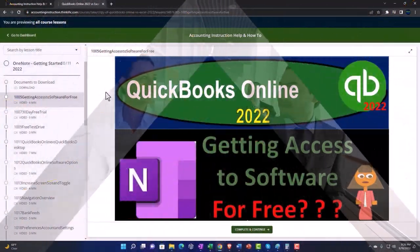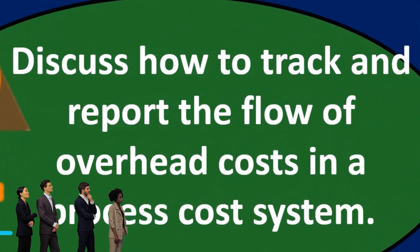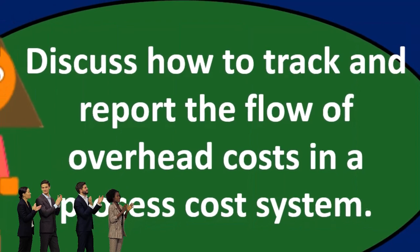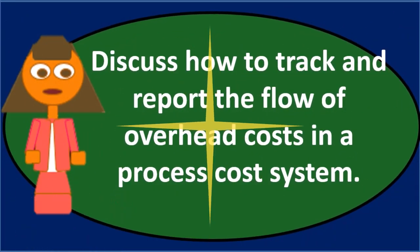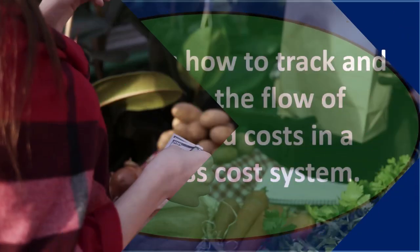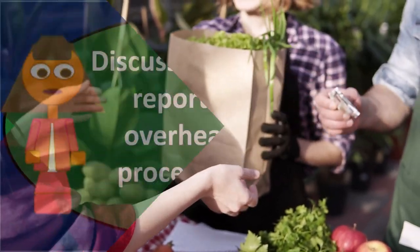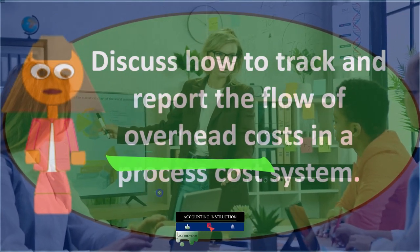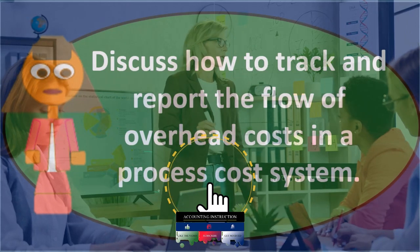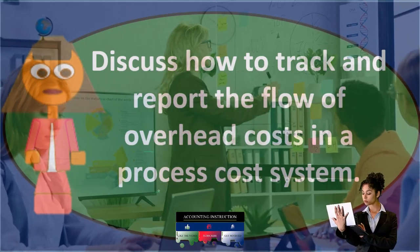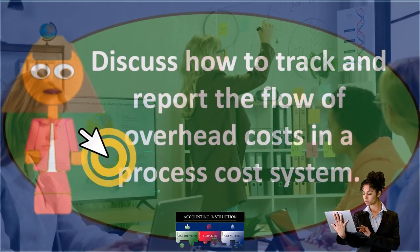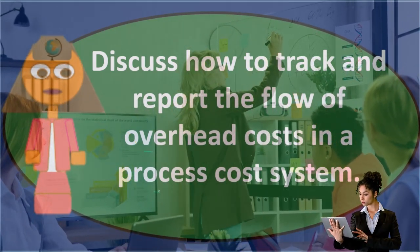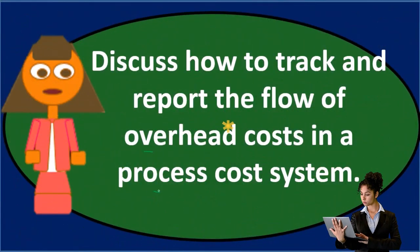When we see a discussion question or essay question like this, we're going to pull out the key points and expand on them. We'll pick up points by defining items. The key topics are: the process cost system, what overhead is, and the flow of overhead — which is probably the most complex part of the question.